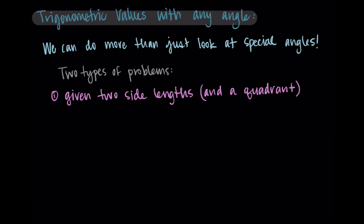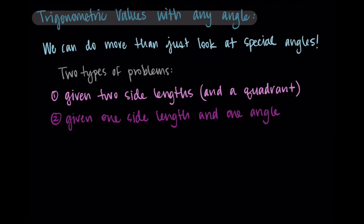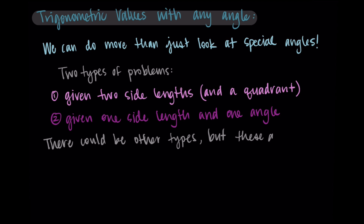We'll focus on this first type for this video, but I also want to highlight the second type. The other type of problem is where we're given just one side length but we're also given the angle — a side length and an angle — and we need to determine the other information. These are the most common and what I'm going to focus on.